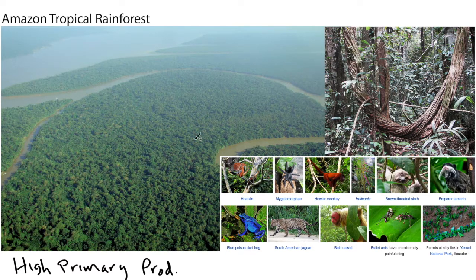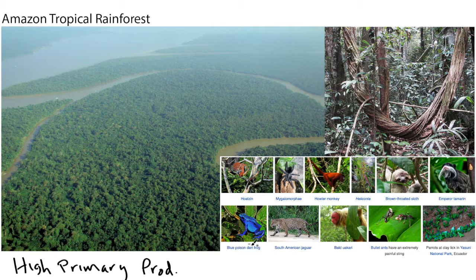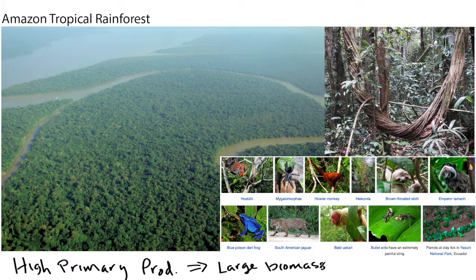Some plants capture sunlight at the top of the forest canopy, and all sorts of other plants grow beneath that upper canopy. That leads to a very high biomass that can be consumed by grazers and then by all sorts of other animals including predators like the jaguar, frogs that eat insects, insects that eat insects, insects that eat plants, and a variety of birds. So when you have very high primary productivity, you end up with a large biomass and a very diverse food web with lots of members in it.